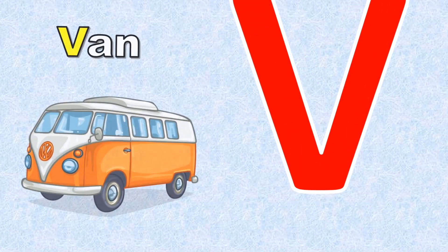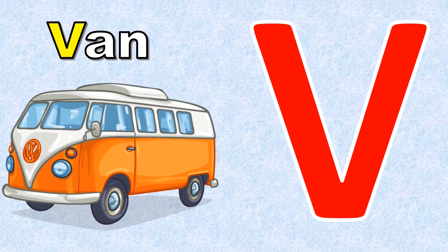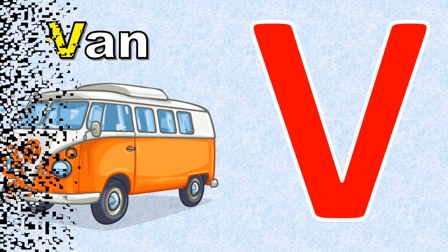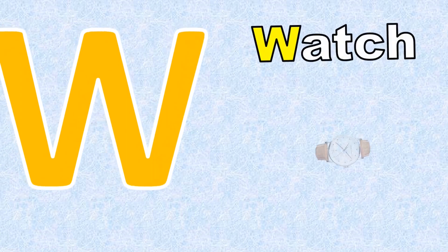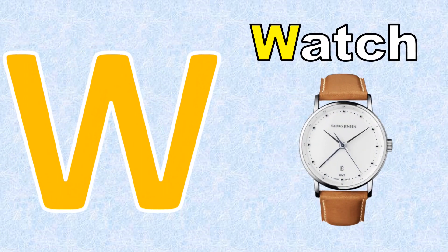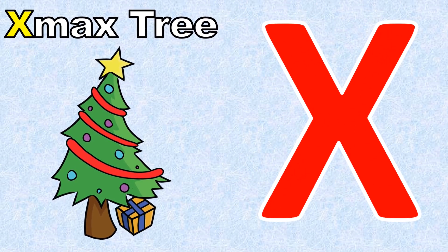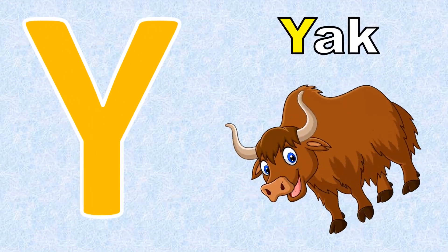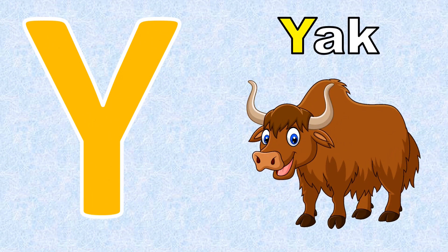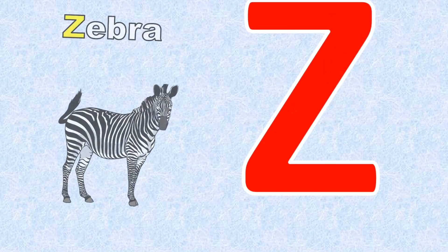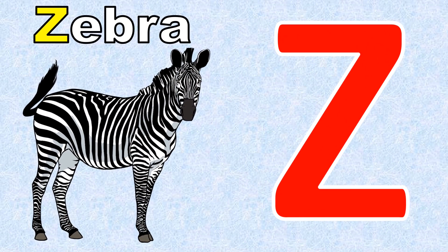V for Van. W for Watch. X for Christmas Tree. Y for Yak. Z for Zebra. Thank you.